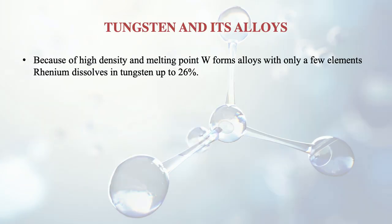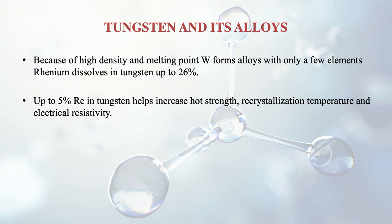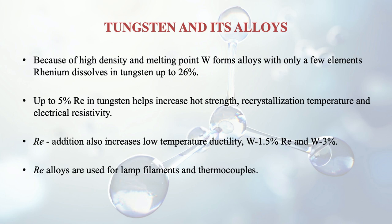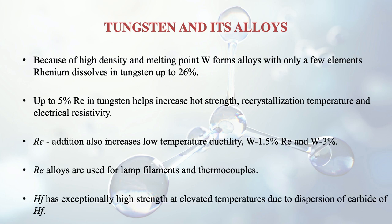Because of its good thermal conductivity and low coefficient of thermal expansion, tungsten is not distorted by a rise in temperature. Due to high density and melting point, tungsten forms alloys with only a few elements. Rhenium dissolves in tungsten up to 26%. Up to 5% rhenium in tungsten helps increase hot strength, recrystallization temperature and electrical resistivity. Rhenium addition also increases low-temperature ductility. Two kinds of alloys exist with around 1.5% and 3% rhenium. Rhenium alloys are used for lamp filaments and thermocouples. Hafnium is also used as an alloying element, giving exceptionally high strength at elevated temperatures due to dispersion of hafnium carbide.